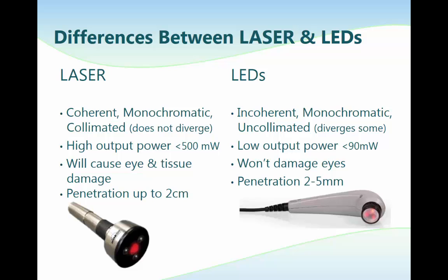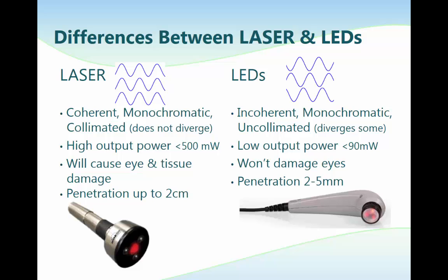It is important to examine the differences between laser and LED. For light therapy to be classified as laser, it must be coherent, monochromatic, and collimated. Lasers have a high output power at or below 500 milliwatts and have the potential to cause eye and tissue damage, with a depth of penetration of approximately 2 centimeters. LEDs are incoherent, monochromatic, and uncollimated. They have a low output power of less than 90 milliwatts, will not damage eyes, and have a depth of penetration of approximately 2 to 5 millimeters.